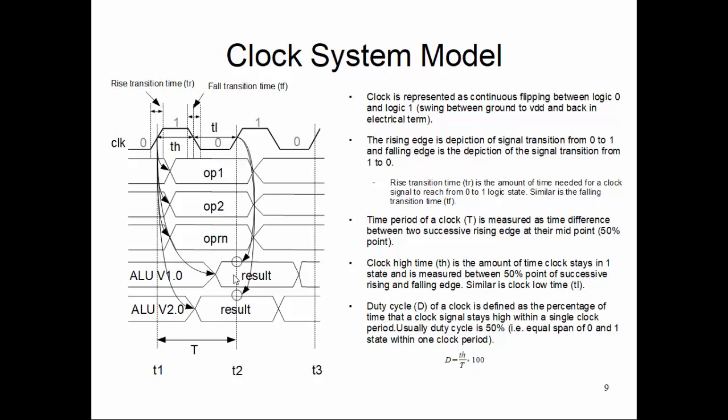A couple of technical terms on the clock system side: your time period of a clock is measured as the time difference between two successive rising edges, or you can measure at the falling edge, it doesn't matter, it will be the same. Between falling edge time and rising edge time, it's always the same amount. Clock high time is the time the clock stays in one state, measured between 50 percent of the successive rising and falling edges. This is the time it stays high.